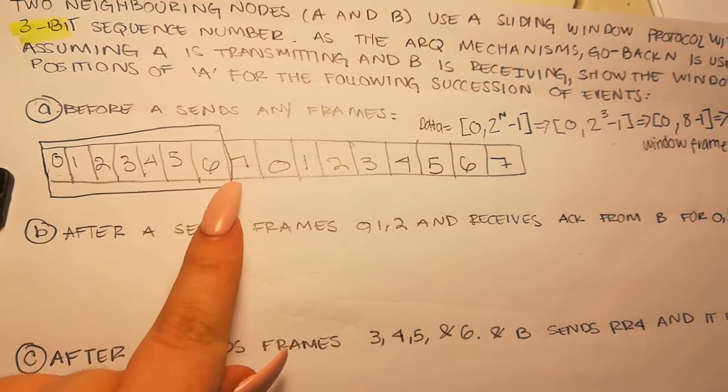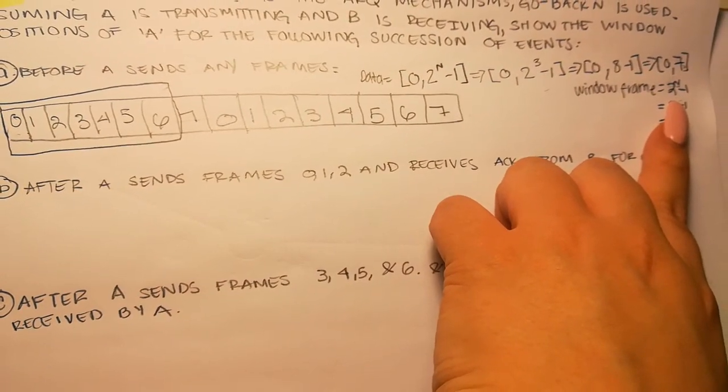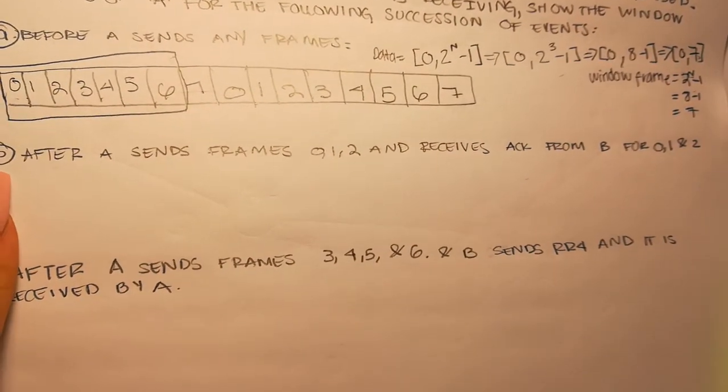So first, from zero to six is going to be your window because we have seven spots: one, two, three, four, five, six, seven. We got that from this formula.